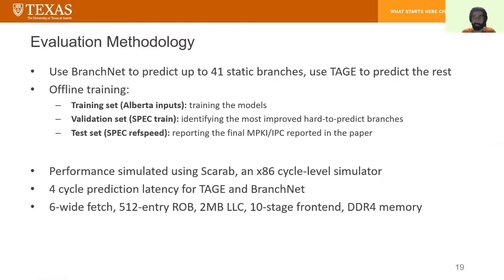We use Alberta inputs to actually train the BranchNet models. We use SPEC train inputs to identify the most improved hard to predict branches. And we use SPEC reference inputs to report the final MPKI and IPC numbers as reported in the paper or in this presentation. To report performance numbers, we use our own simulator SCARAB, which is a detailed cycle level x86 simulator. You could find the details in the paper, but the most relevant part is that we use the four cycle prediction latency for both TAGE and BranchNet.